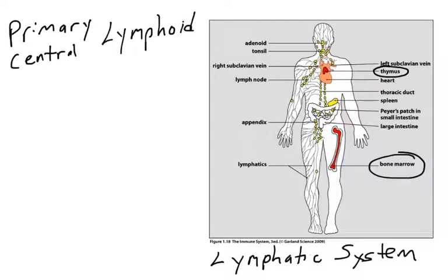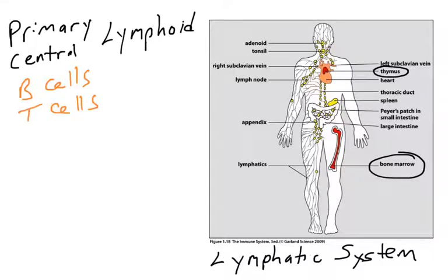When we talk about the lymphatic system, what organs are we talking about? There are primary lymphoid tissues, sometimes called central lymphoid tissues. These are the bone marrow and the thymus. They're called primary because that's where immune cells originate and undergo development — B cells and T cells undergo their training in those organs.